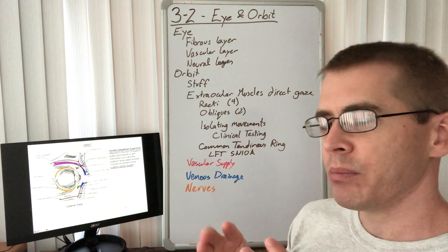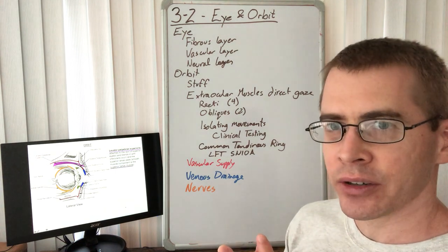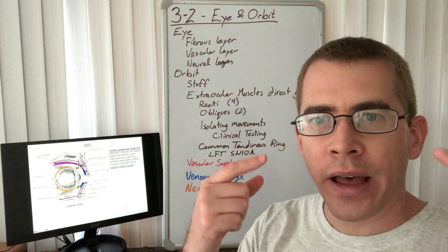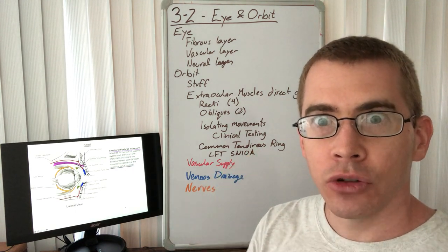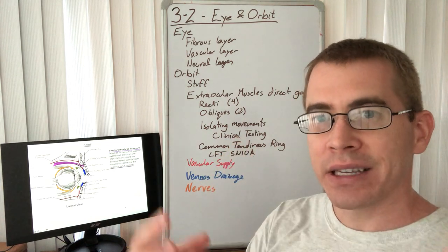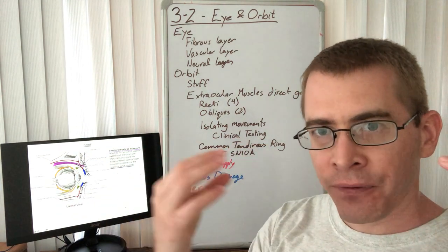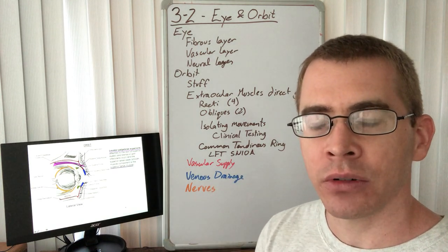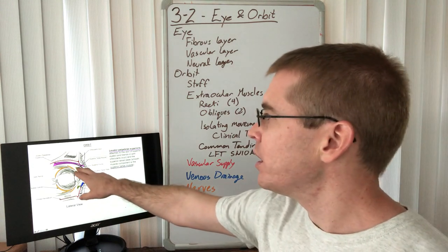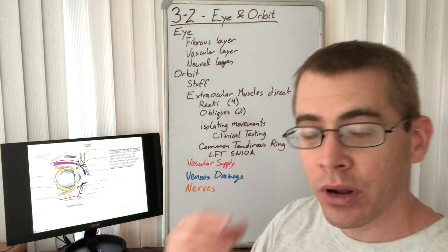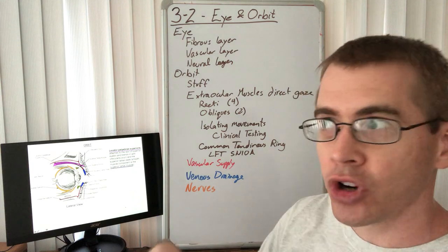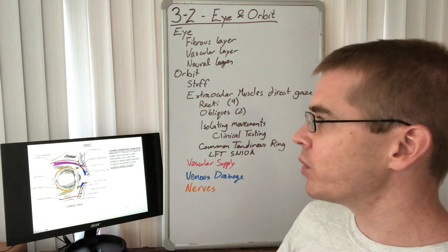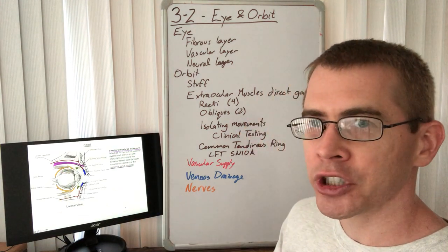The superior tarsal smooth muscle component is sympathetically innervated. When the sympathetic nervous system is activated, there is an autonomic response to raise the eyelids, letting in more light and information in a fight-or-flight situation. We also have skeletal muscle control over blinking and opening the eyes, for instance when we are tired.